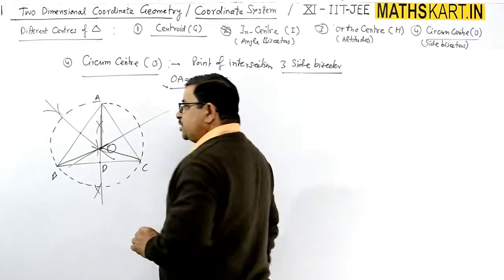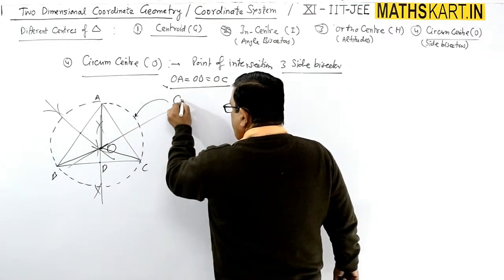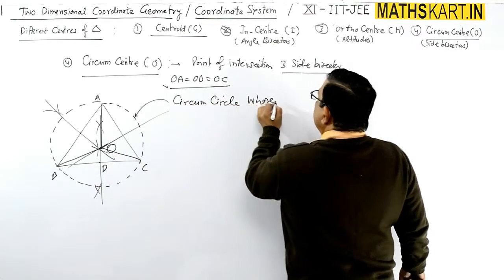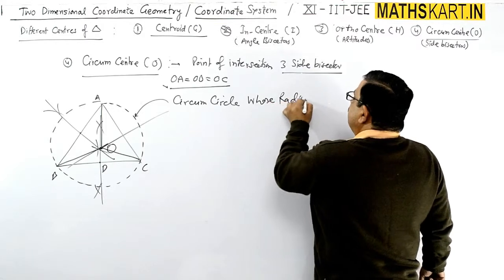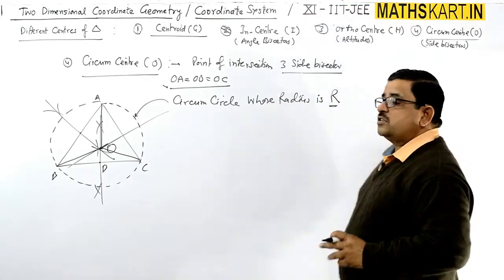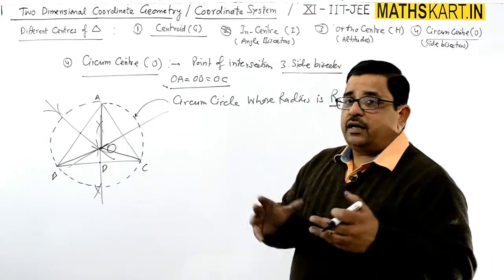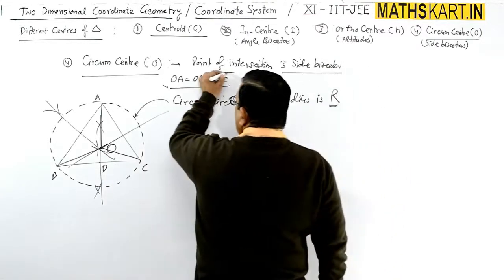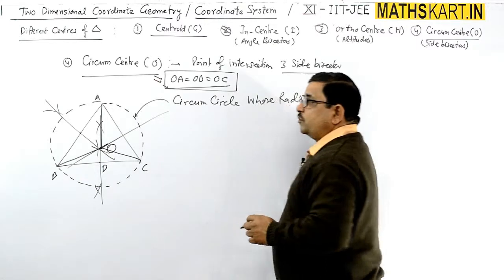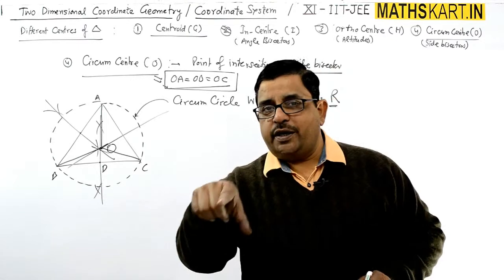You can draw one circumcircle. This is the circumcircle whose radius is R. Its radius is given by R and the center is given by O. This is used for finding out the circumcenter.